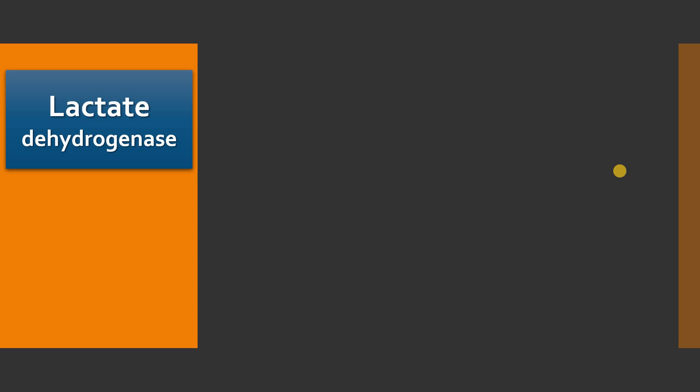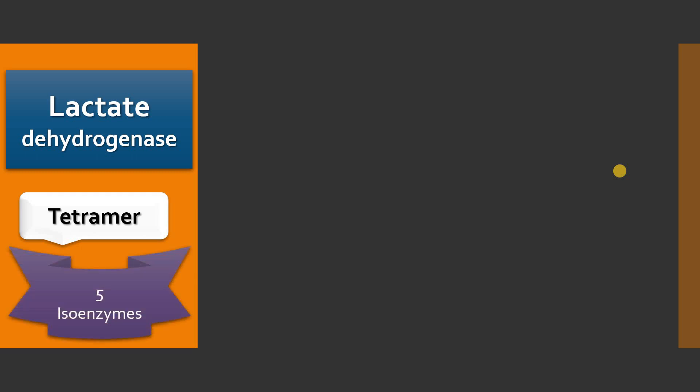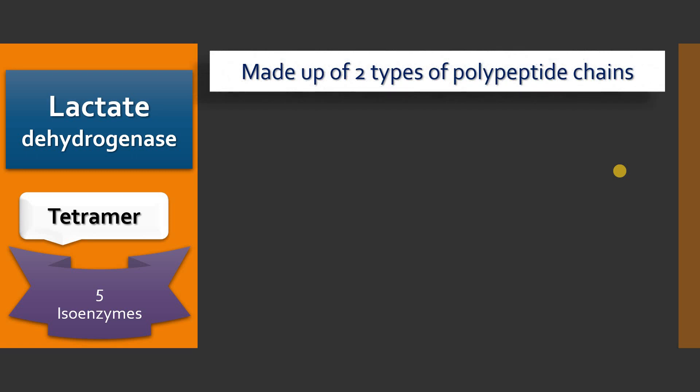Since this is an isoenzyme, it is made up of four subunits — it is called a tetramer. Whereas creatine kinase is a dimer, this enzyme has five isoenzymes. Even though it consists of four subunits, it is mainly made up of two types of polypeptide chains.